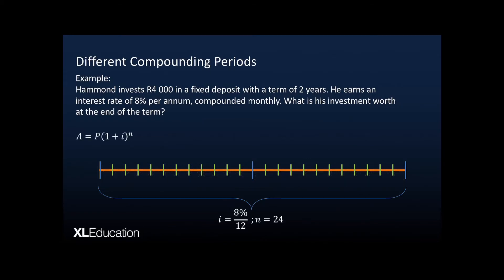We plug that into our formula: our principal is 4,000; our interest rate becomes 8%/12; and two years becomes 2 × 12 = 24 months. Everything has been adjusted to reflect monthly compounding — periods are counted in months and the interest rate is now a monthly interest rate. We find that Hammond gets 4,691 rand and 55 cents at the end of that period.